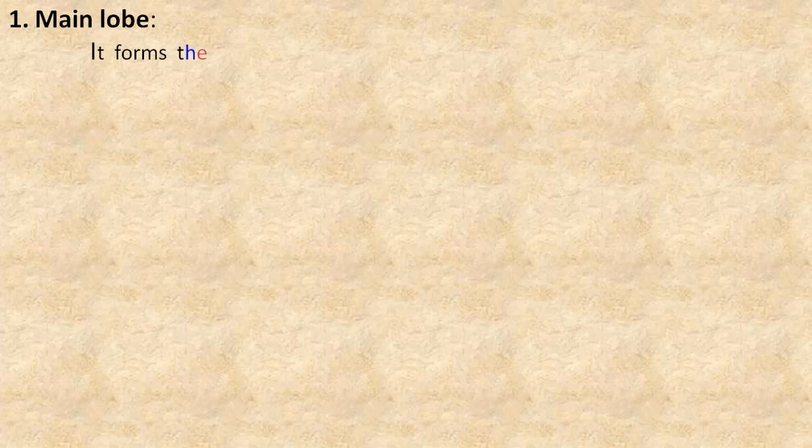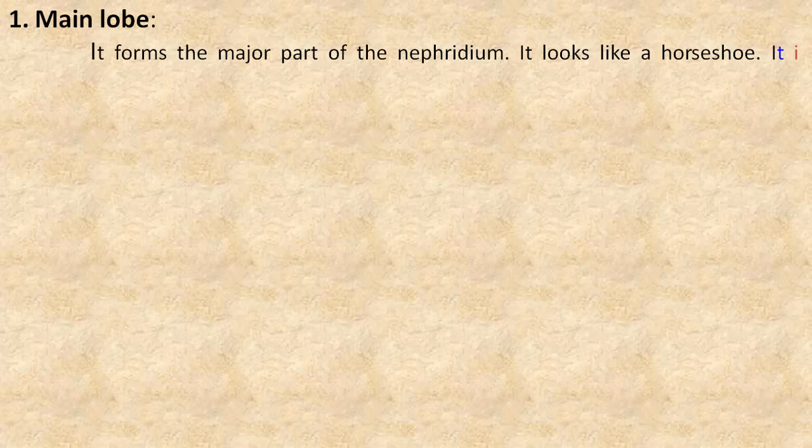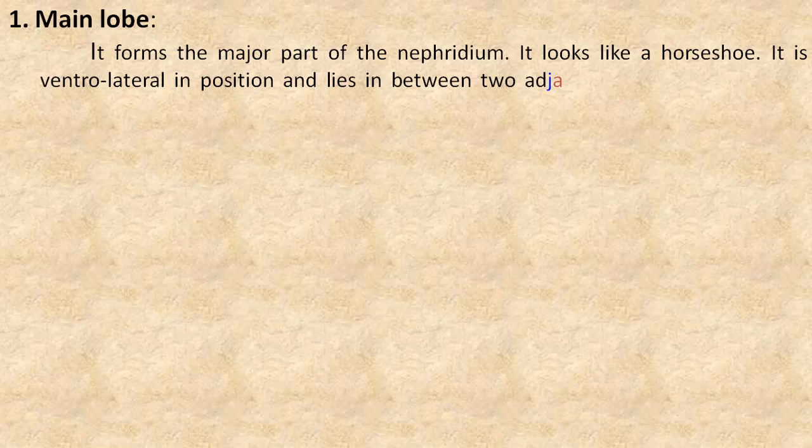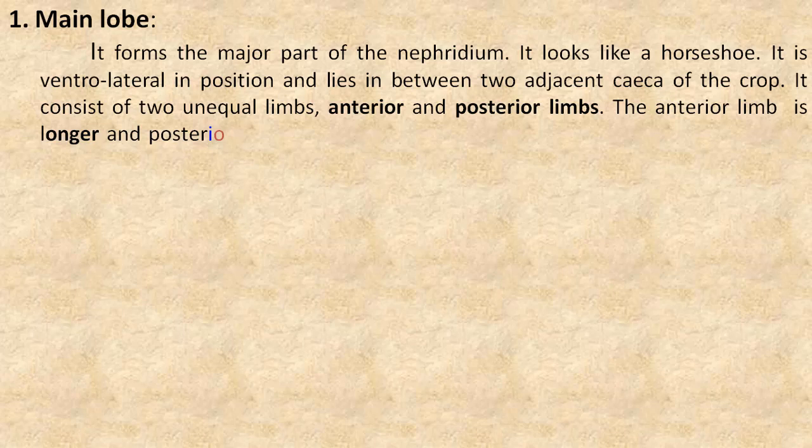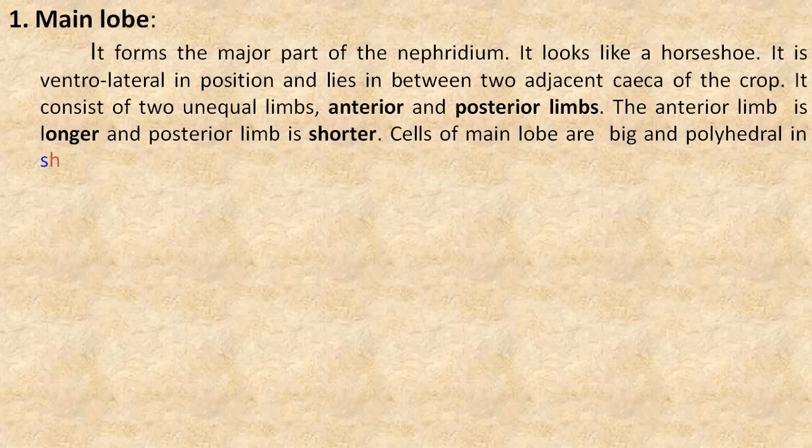First, the main lobe. It forms the major part of the nephridium. It looks like a horseshoe. It is ventrolateral in position and lies in between two adjacent caeca of the crop. It consists of two unequal limbs: anterior and posterior. The anterior limb is longer and the posterior limb is shorter. Cells of the main lobe are big and polyhedral in shape.